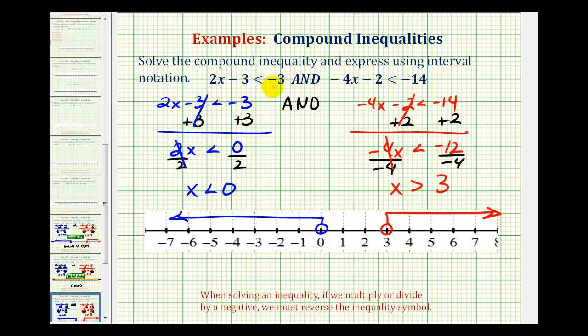Now remember these two inequalities were connected by AND, meaning we want the values that satisfy both inequalities at the same time, which would be the intersection of these two intervals. Notice there is no intersection of these two intervals.